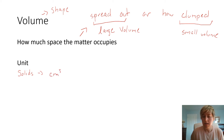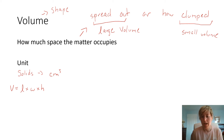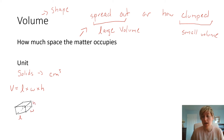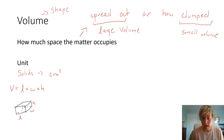We calculate volume mathematically using the equation: volume equals length times width times height. This equation can only be used for regular-shaped objects where you can actually measure the length, width, and height. So if I have a box shape, I identify those three dimensions and calculate the volume from those measurements.